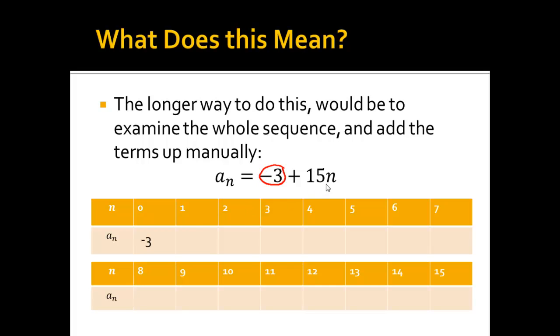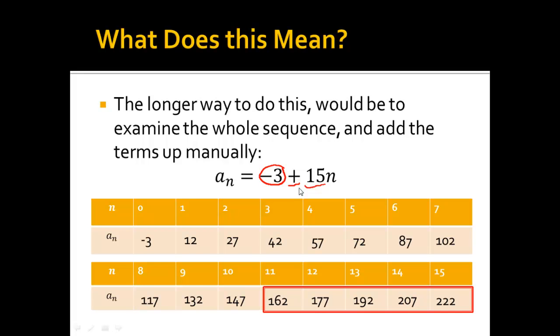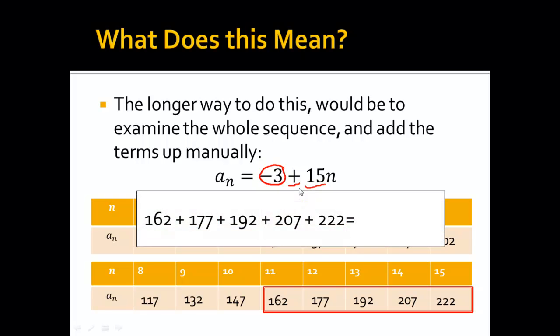So, the negative three goes in there. And then, each and every time, right, I'm adding, because that's what the plus is here, fifteen. All right, so I'm going to add fifteen. That gives me twelve. And now, I'm just going to keep on adding fifteen. And, boom, there we go. Now, the only ones I'm actually looking at are eleven through fifteen. So, I'm looking at those numbers. I'm going to go ahead and add all those up. And I'll get nine hundred and sixty.